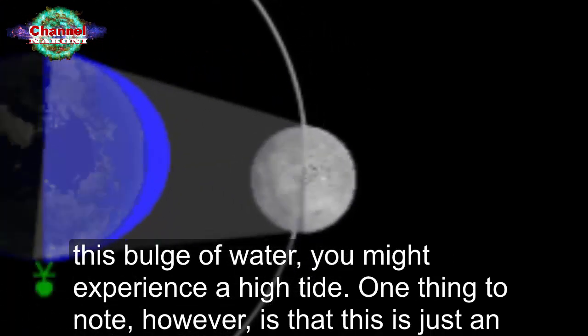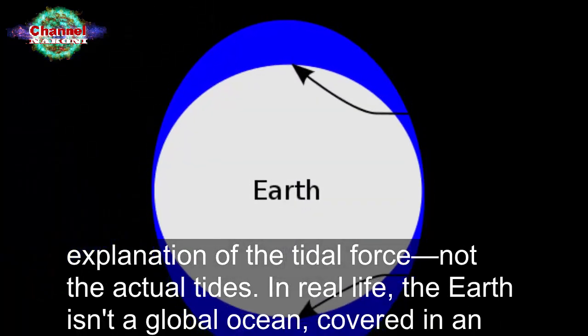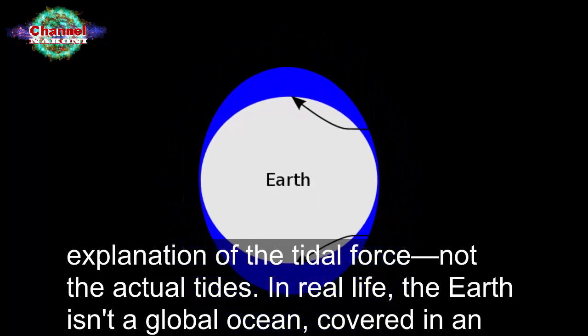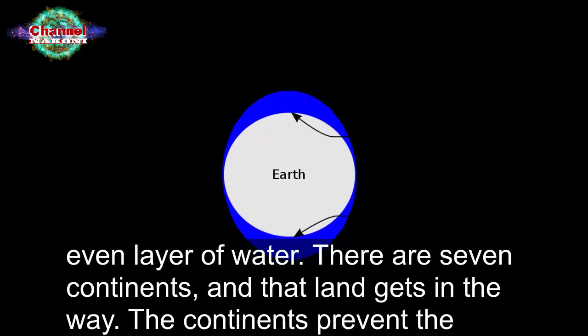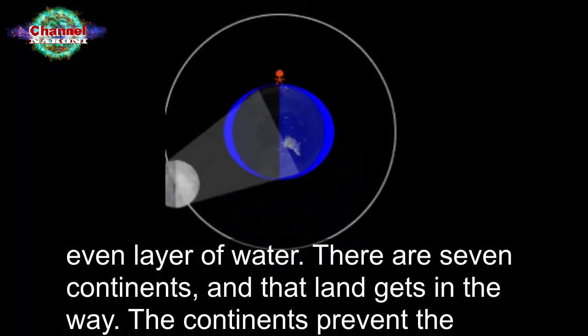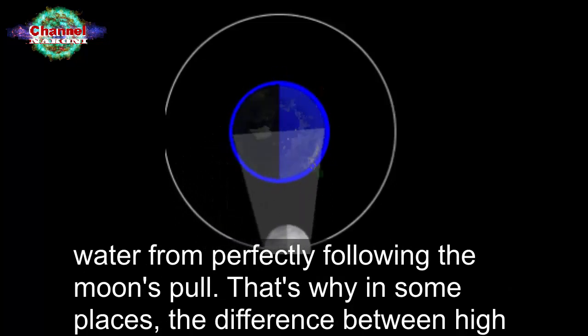One thing to note, however, is that this is just an explanation of the tidal force, not the actual tides. In real life, the earth isn't a global ocean covered in an even layer of water. There are seven continents and that land gets in the way. The continents prevent the water from perfectly following the moon's pull.